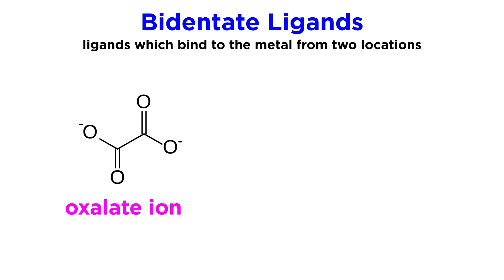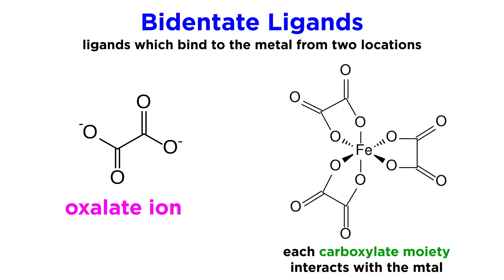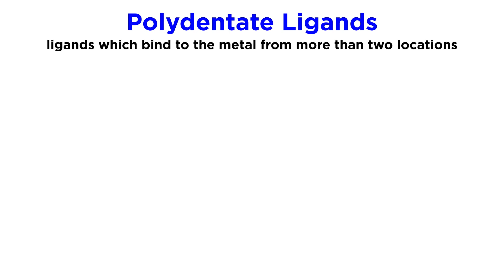Another bidentate ligand is the oxalate ion. This has two carboxylate moieties that can each interact with the metal atom. It doesn't stop at bidentate — we can also have polydentate ligands, which make more than two interactions with the metal atom.